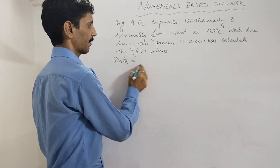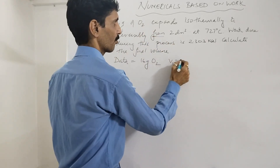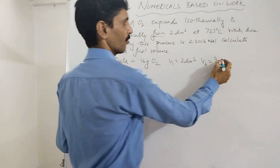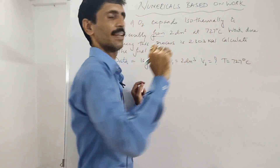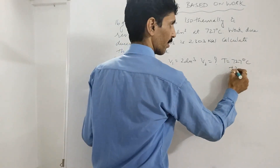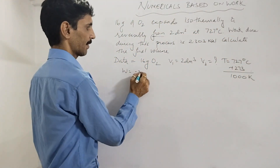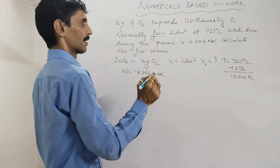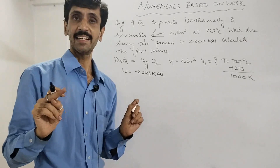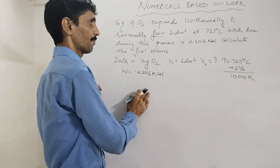Data: 16 grams of oxygen. Initial volume v1 = 2 dm³. Final volume v2 = ? Temperature = 727°C. In thermodynamics temperature must be in Kelvin, so adding 273 gives 1000 K. Work W = −2.303 kilocalories — negative because work is done by the system.